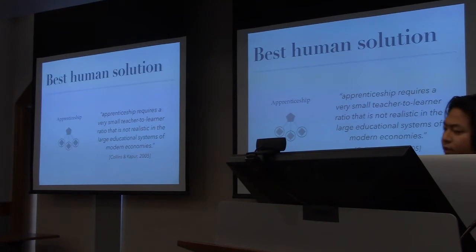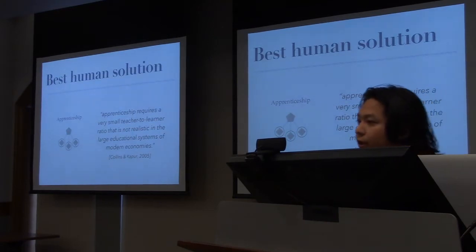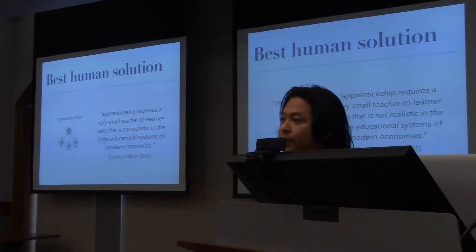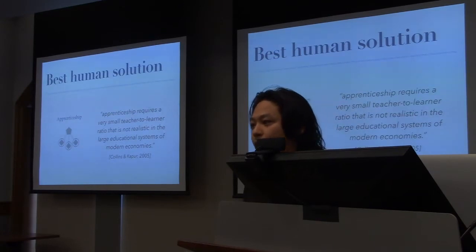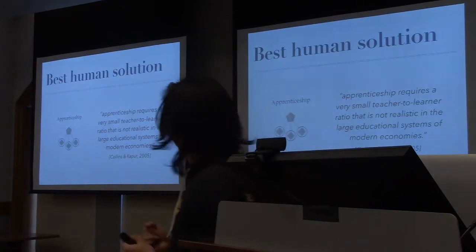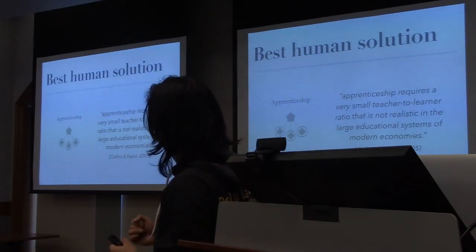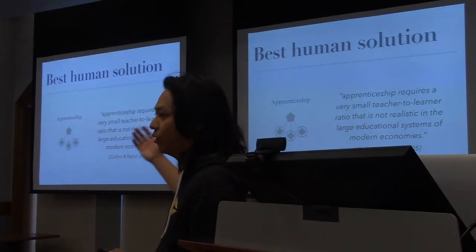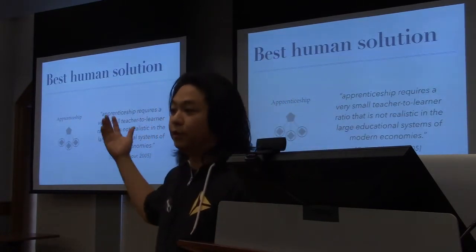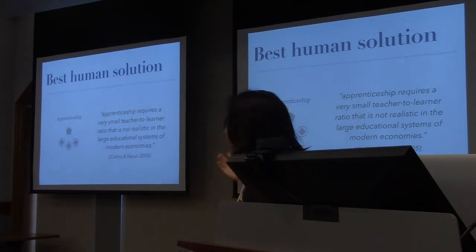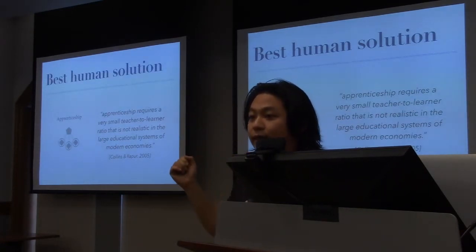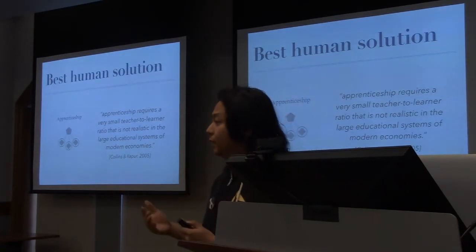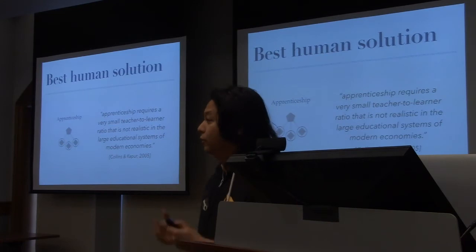This question turns out to be really hard because the best human solution we have, unfortunately, doesn't scale. You're all familiar with the solution — it's called apprenticeship, or one-on-one mentoring. It's a highly effective model for training people how to do complex tasks like research, for example.